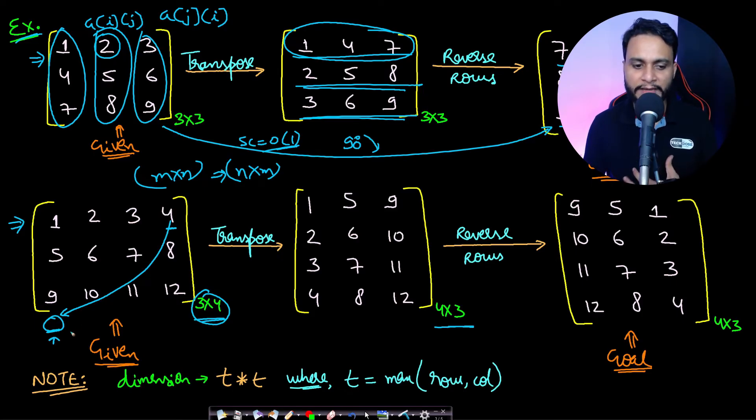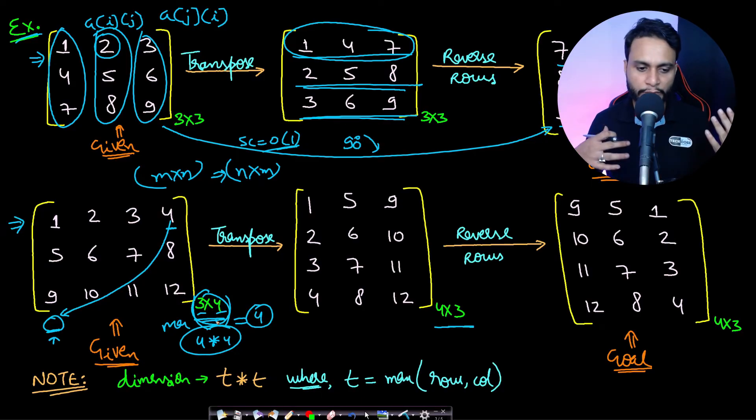It should be of sufficient size. How do I know what should be the sufficient size of the array? It should be the maximum of your row comma column. So if I take it will be 4, so the size of the matrix should be 4 by 4, so that in whatever way you rotate, actually nothing will go out of bounds. So you should take care of this. So the dimension of the array should be T by T, where T is equal to maximum of your row count comma column count.